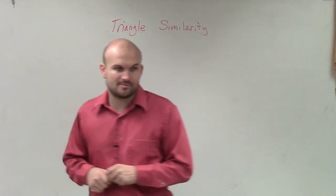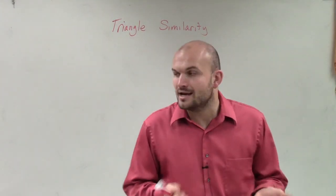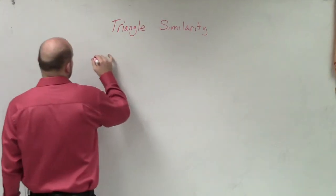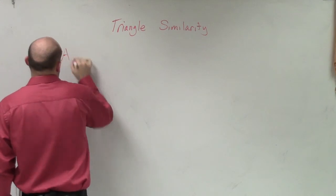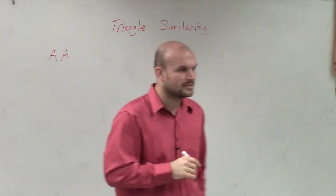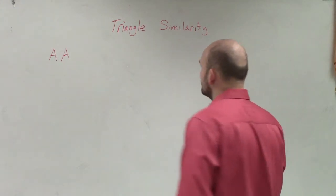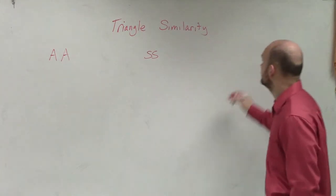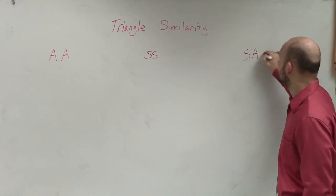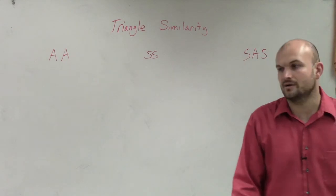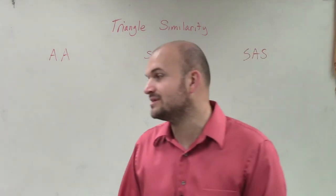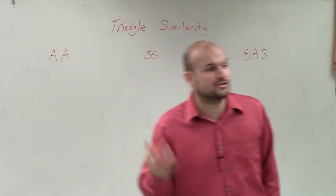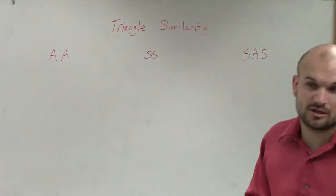There are three different ways we're going to be able to prove if two triangles are similar. The first one is angle-angle. And I'll give you guys an example of each one of these in just a second. Angle-angle, side-side, and side-angle-side. You're going to want to write these down because these are going to be helpful in determining whether two triangles are similar or not. We know how to determine if they're congruent, but the tests for similarity are a little bit different.